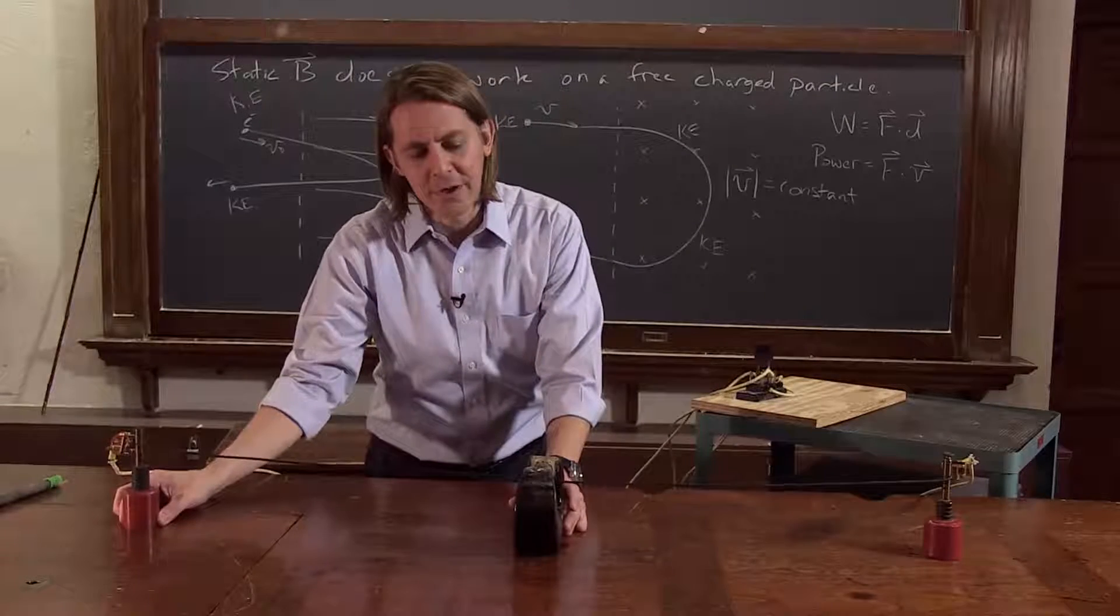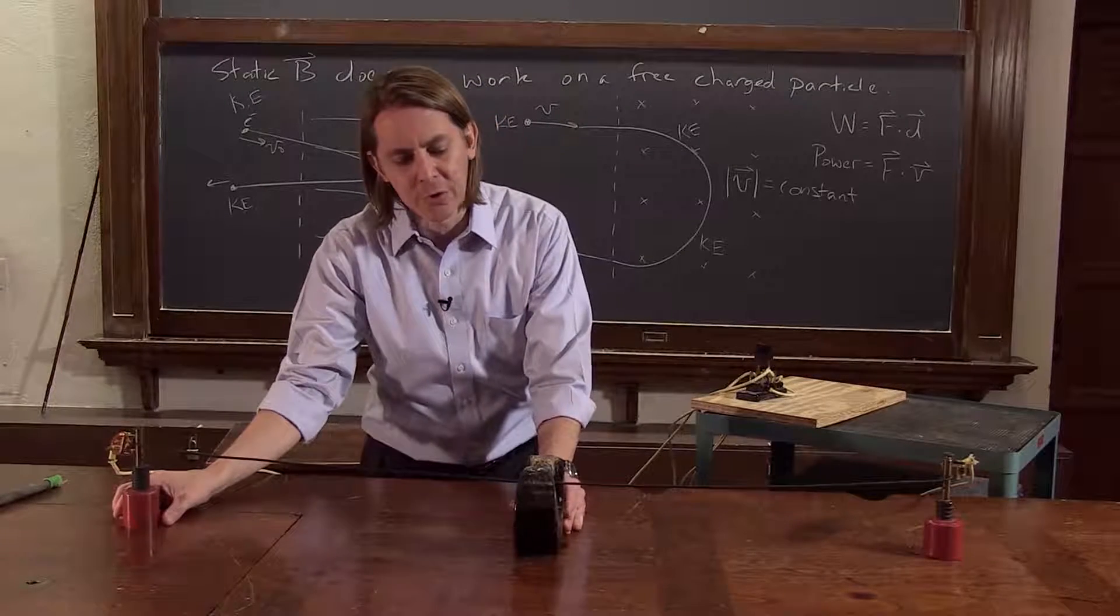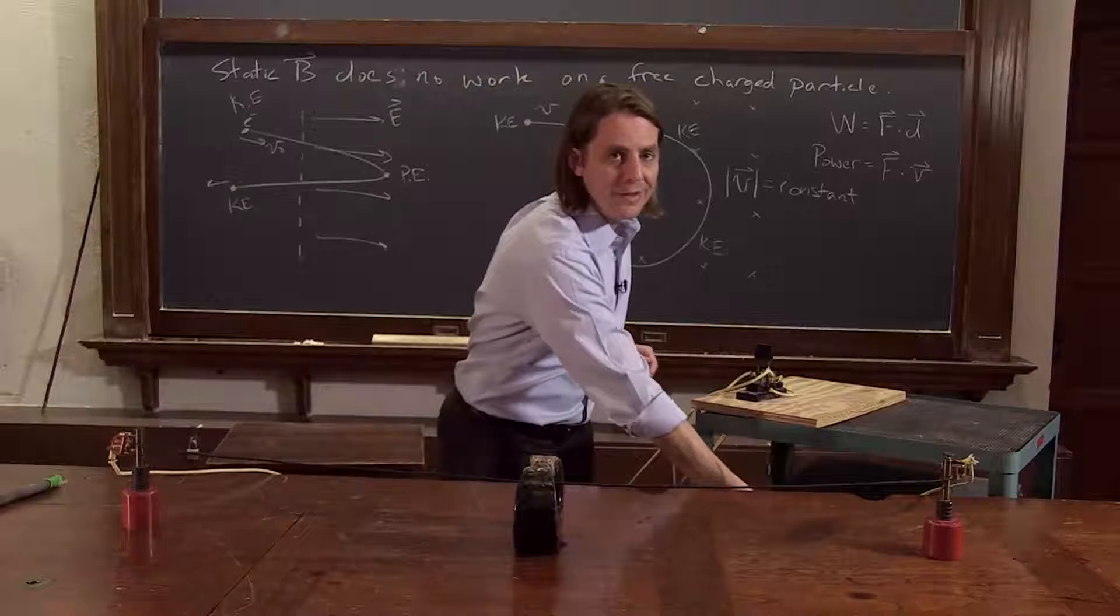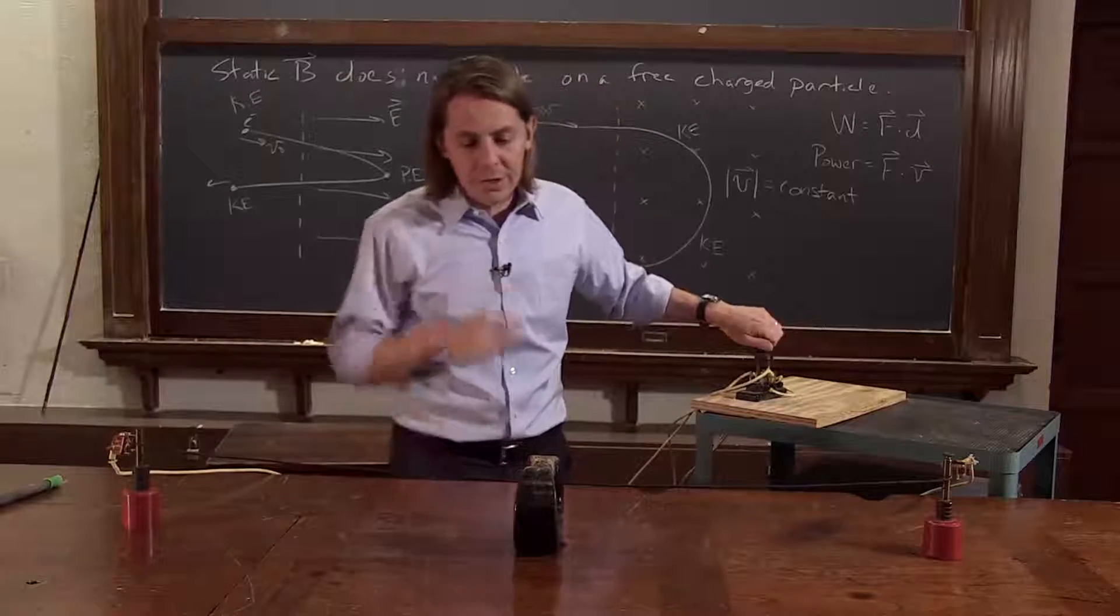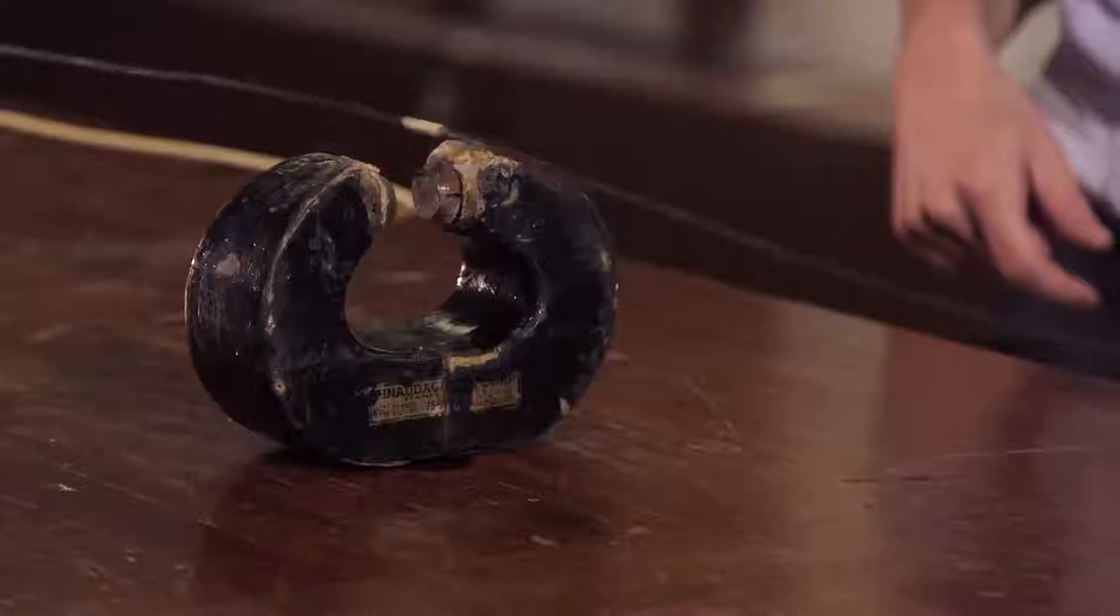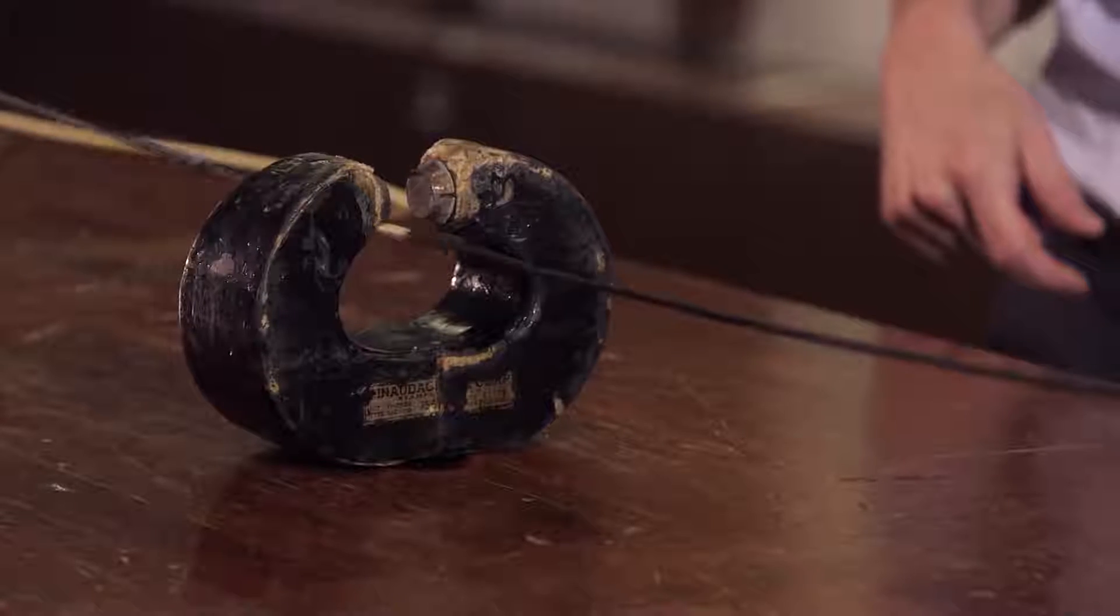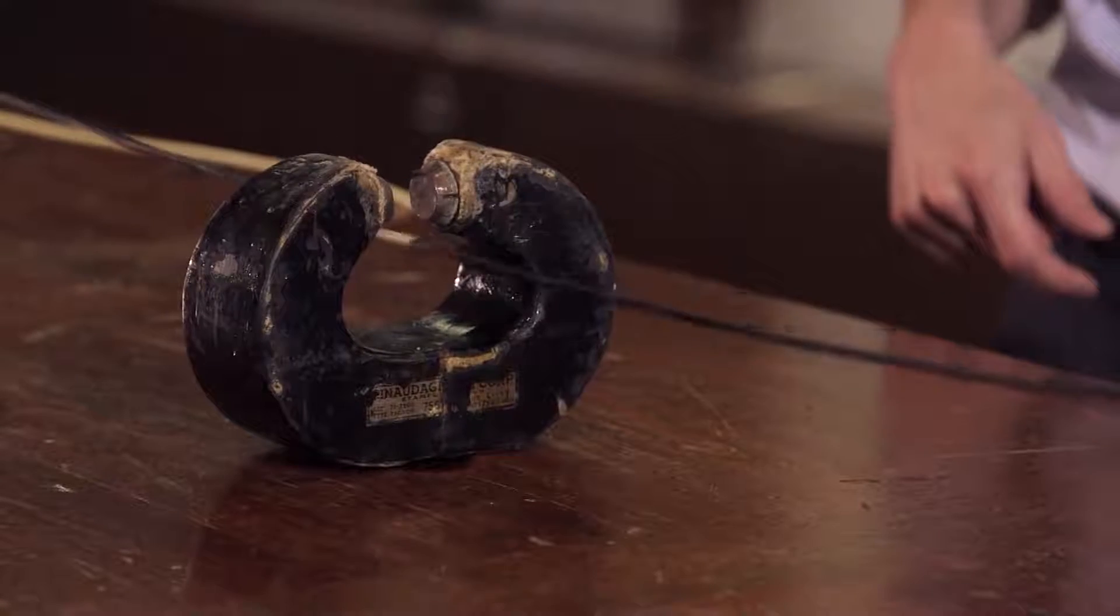So if I turn on the power and the current flows, what's going to happen? Let's see. Turn it on. Here's the switch that starts the current and it jumps up. It jumps up. It wants to go in a circle, but it can't.